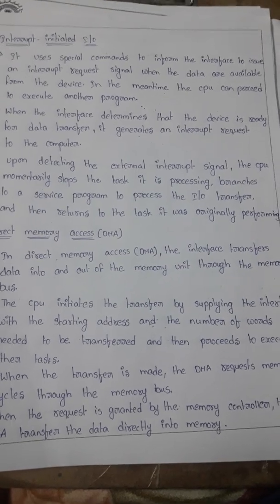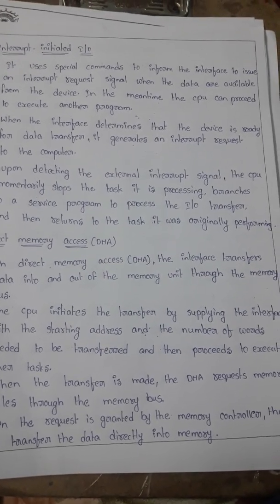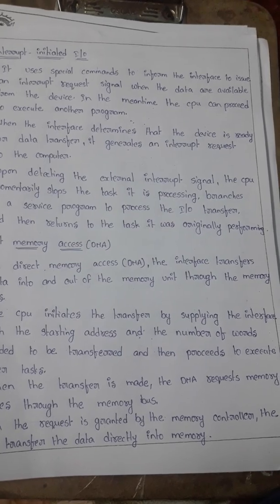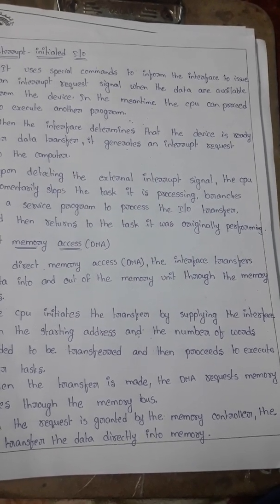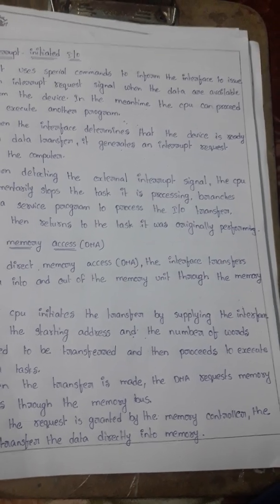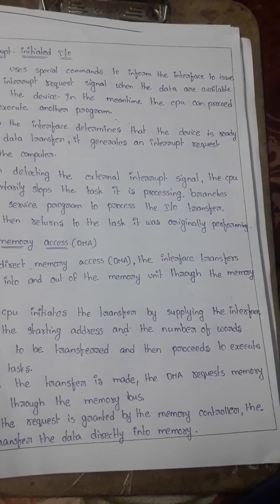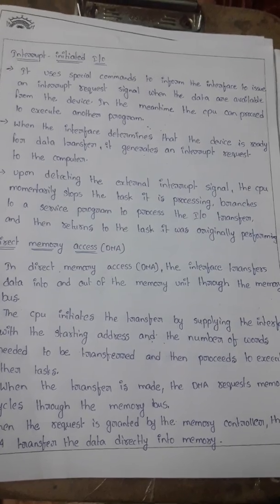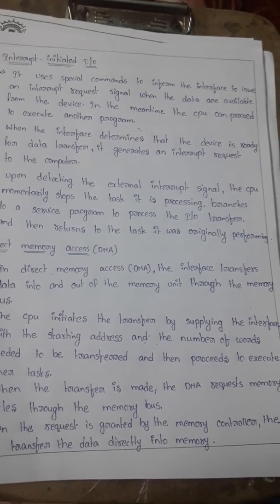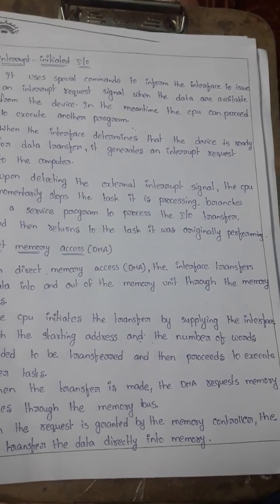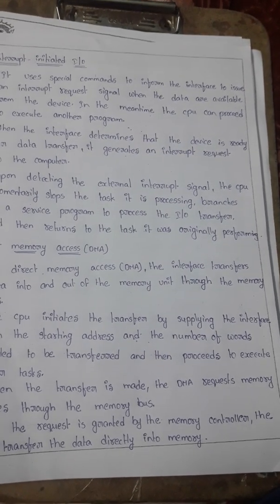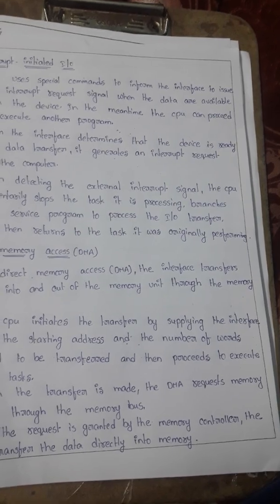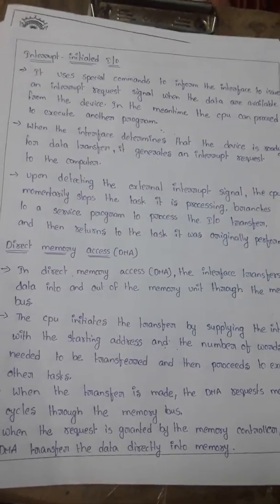When the transfer is made, the DMA requests memory cycles through the memory controller. When data is available at the interface, the DMA controller requests the memory controller for memory cycles because the data has to be stored in memory. When the memory controller grants the request, the data is transferred directly into the memory. When the CPU requires the data, it directly takes the data from the memory. The interface transfers data to and retrieves data from the memory.